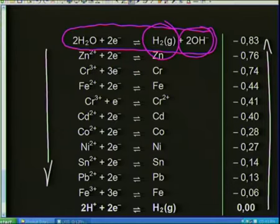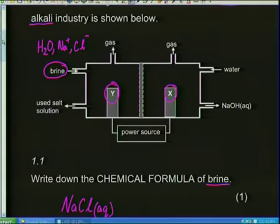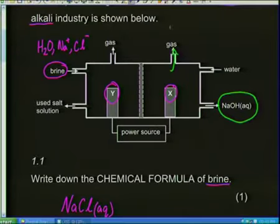I want you to look at the reaction right up at the top of the redox table — this is the reaction I particularly like because it produces two of the products I'm interested in. It produces H2 and it produces hydroxide ions. Those are products which come out of the chloralkali industry. When I look at my diagram, I see that NaOH is coming out somewhere, with OH⁻ ions on the right-hand side. That means the gas coming out there is going to be hydrogen, because hydrogen and the OH⁻ ions are produced in the same cell.